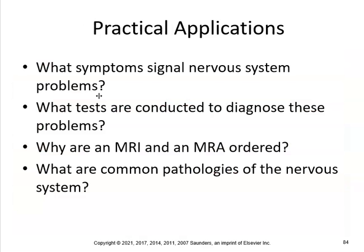Practical applications: What symptoms signal nervous system problems? Numbness and tingling, vision problems, cognitive problems, and gait issues — gait meaning walking. What tests diagnose these problems? CT scans, MRIs, PET scans. Why are an MRI and an MRA ordered? And what are common pathologies of the nervous system? As you study for the midterm and the chapter 10 quiz, keep all of that in mind.